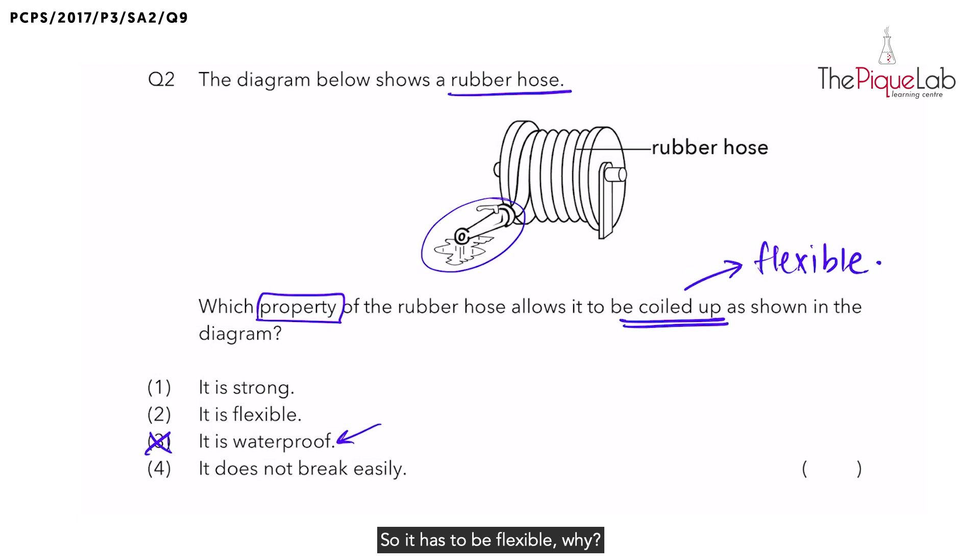So it has to be flexible. Why? So that it can coil around the pole without breaking. So the answer is actually number two. It is flexible.